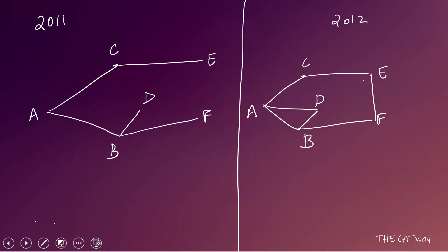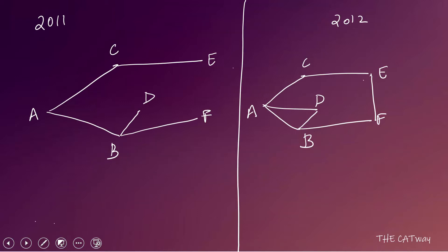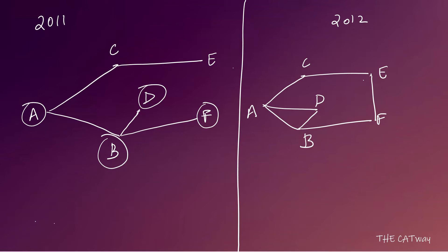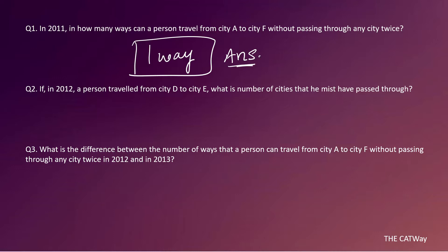Question 1: In 2011, in how many ways can a person travel from city A to city F without passing through any city twice? To reach F, the only connection is through city B. And to reach B from A, there is only one direct road. So the only route is A → B → F. The answer is 1 way.